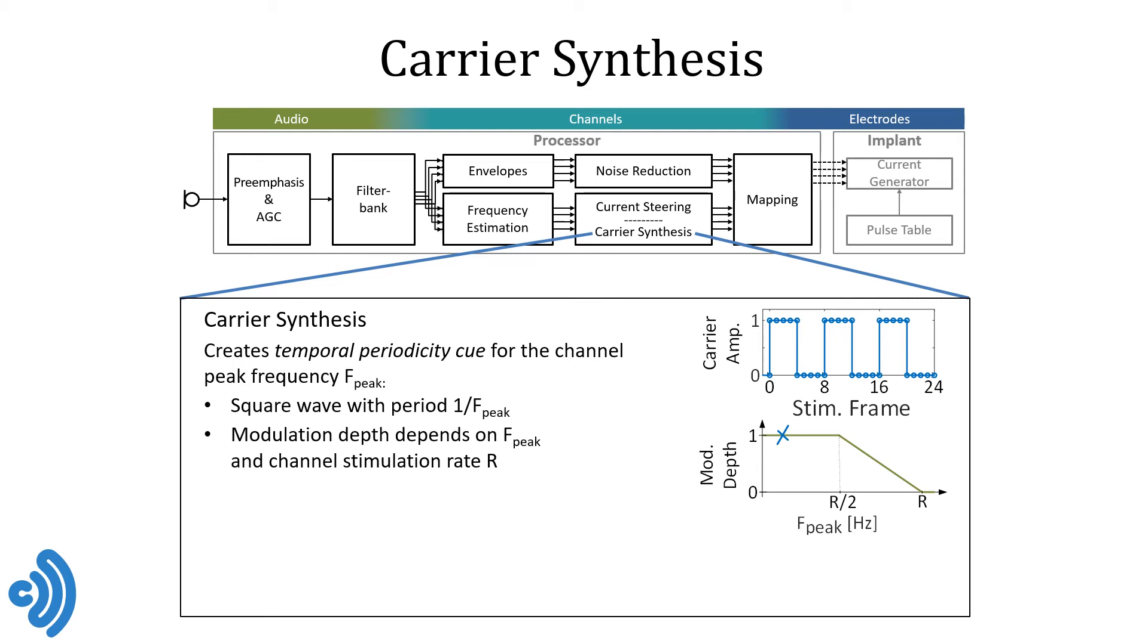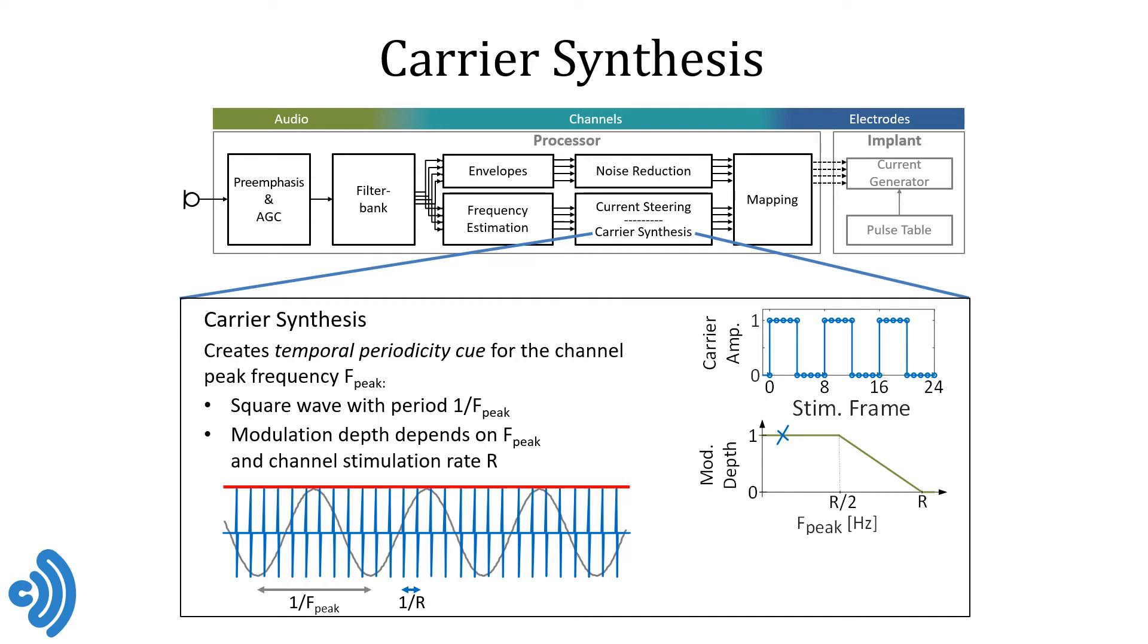We talked about the biphasic pulse train as the carrier signal for the electrical current in CI stimulation. What we are doing here is effectively generating a modulated carrier, hence the term carrier synthesis for this operation, which is then modulated further by the channel envelopes. Here at the bottom you see the effect of carrier synthesis when the audio input signal is a sine wave with constant frequency and amplitude. The envelope will be flat in this case and without carrier synthesis we would get a constant amplitude stream of biphasic pulses. Once we apply the square wave we obtain this stimulation pattern. The pulses only occur during one half period of the sine wave.